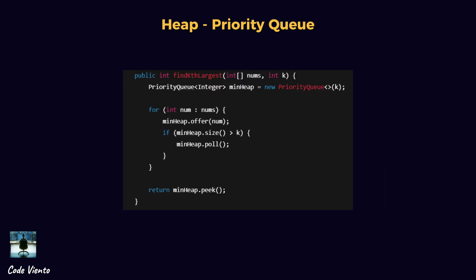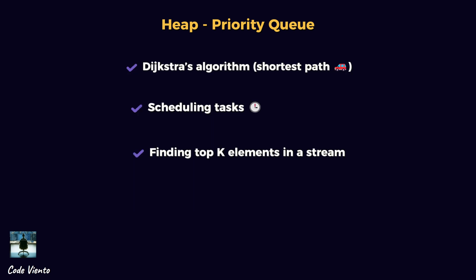Example: find the kth largest element. Insert numbers into a min heap of size k. If the heap size exceeds k, remove the smallest element. At the end, the root of the heap is the kth largest element. Real-life uses for a heap include Dijkstra's algorithm (shortest path), scheduling tasks, and finding top k elements in a stream.